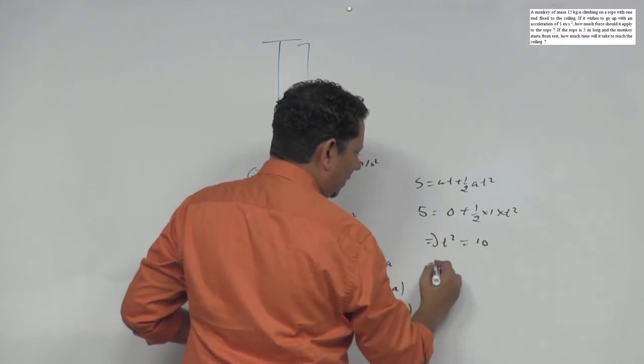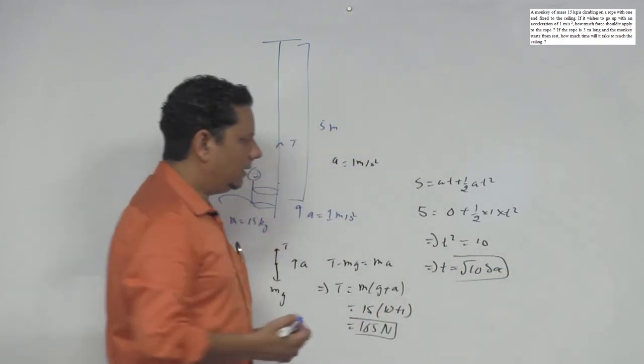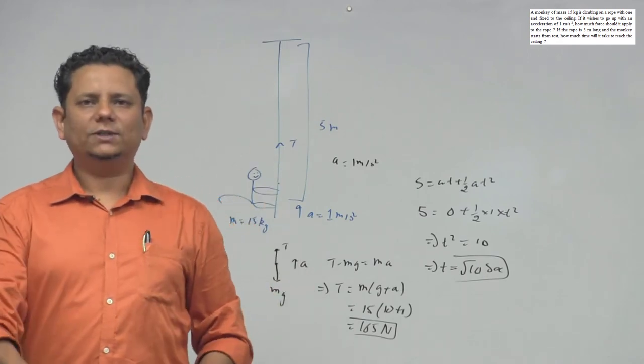Which implies t squared equals 10, meaning time equals square root of 10 seconds. So this is your final time value. In this much time, the monkey will go from bottom to top.